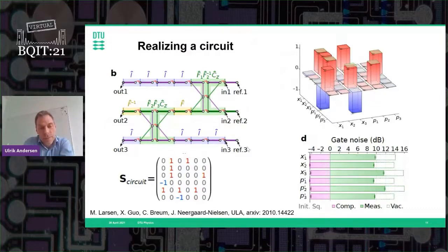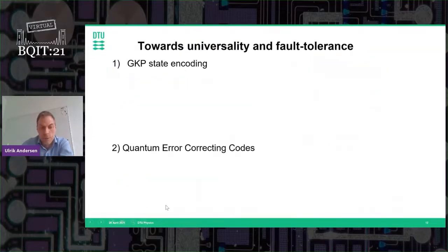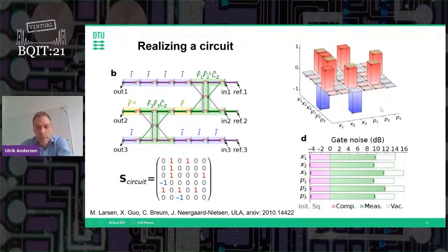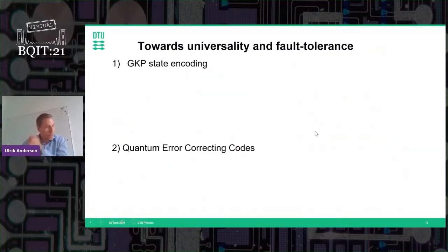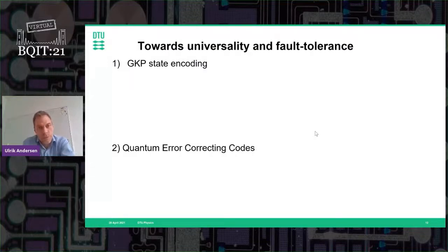We then combine different gates into a small circuit of 12 gates, consisting of two two-mode gates, four Fourier gates, and a number of identity gates — implemented on three input states. We characterize this via the symplectic matrix of the transformation, and we see nice agreement between the measured and expected symplectic matrix. We also characterize the gate noise and indeed measure what was expected.